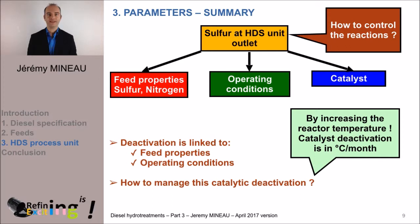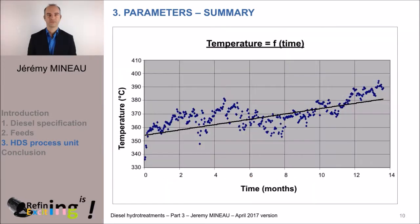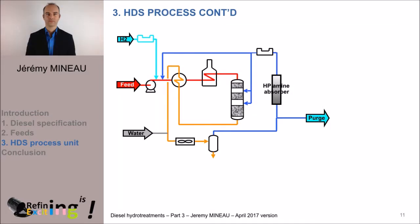To manage this loss in catalytic activity, we increase the temperature. We also use this temperature increase to monitor catalytic deactivation, with units of measure in degrees per month. As shown on the graph, after a while the temperature required to cope with deactivation becomes too high, the catalyst deactivates more and more, and it becomes necessary to stop the unit and replace the catalyst. The time elapsed between start-up of the unit and replacement of the catalyst is called the cycle length.